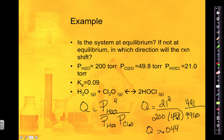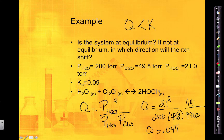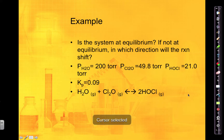Now comparing Q to K: Q is less than K. That means the number on the bottom — the reactants — is too high. The partial pressure of the reactants is too high, so the reaction is going to proceed and make more products. The forward reaction is going to be favored here.